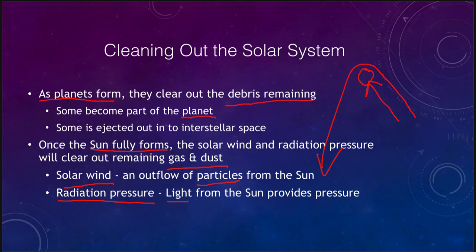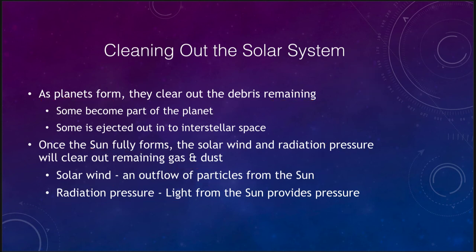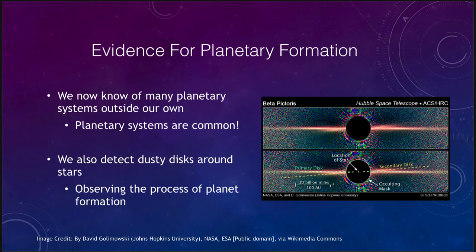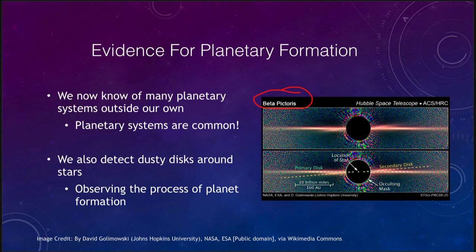What is the evidence that this may have occurred? We can't go back five billion years to see what our solar system looked like, so we use evidence from today and also look at other stars. These Hubble Space Telescope images of the star beta Pictoris show that it actually has a couple of disks around it — a primary and a secondary disk — which could be regions where planets are actually forming right now. So we could be seeing in beta Pictoris what our solar system looked like five billion years ago.